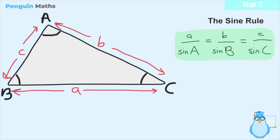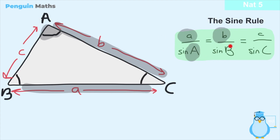If we're given a problem where we know three out of the four values in any part of this ratio, we can calculate the remaining one. For example, if we know the length of side a, side b, and angle A, we can take the sine of angle A, and the sine rule allows us to calculate sine of B and therefore angle B itself. Let's look at an example to explain this more clearly.